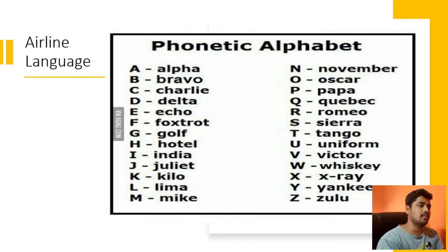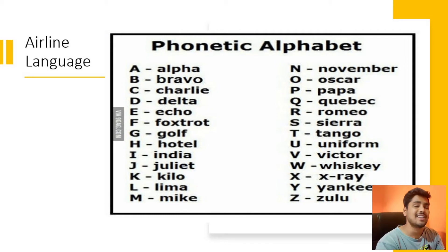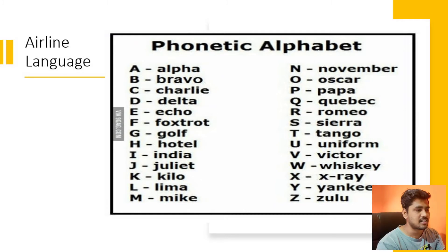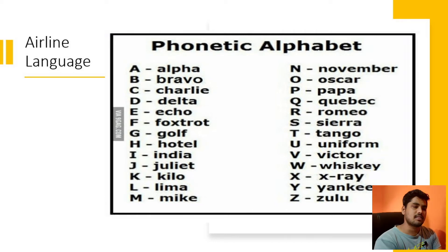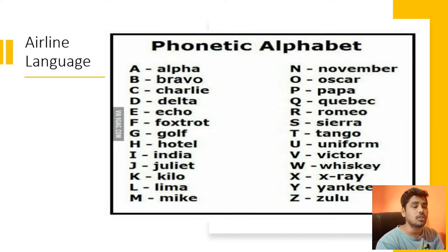As you can see on the back screen, there is a table with all the alphabets: A stands for Alpha, B stands for Bravo, C stands for Charlie, D for Delta, E for Echo, F for Foxtrot, and so on. Have a look at all these alphabets and try to memorize them.